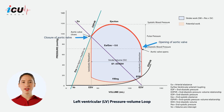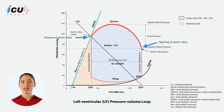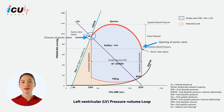Key events during this phase include the opening of the aortic valve, the ejection of blood from the ventricle, the attainment of peak systolic pressure, and the subsequent closure of the aortic valve.